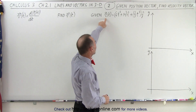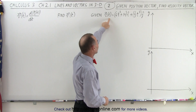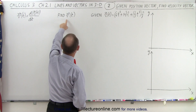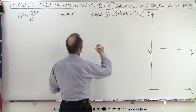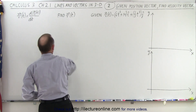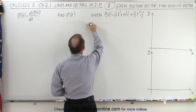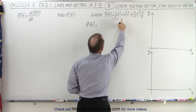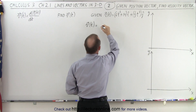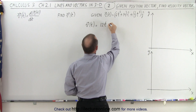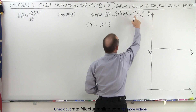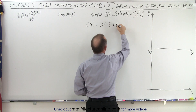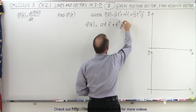Here's the position vector given to us as a function of time. We're going to find the velocity vector, which means we take the derivative of the position vector with respect to time. The velocity vector with respect to time equals 12t in the i direction, plus t squared in the j direction.